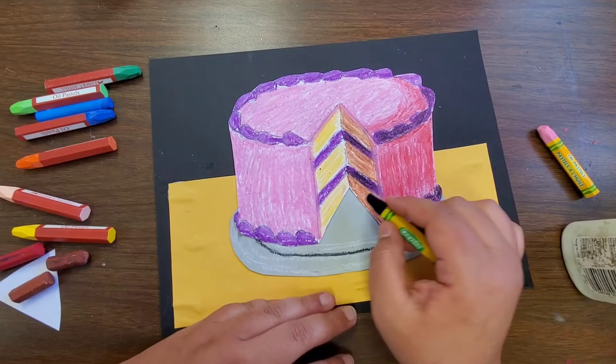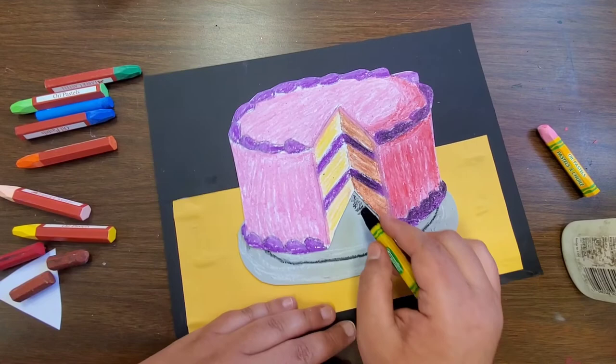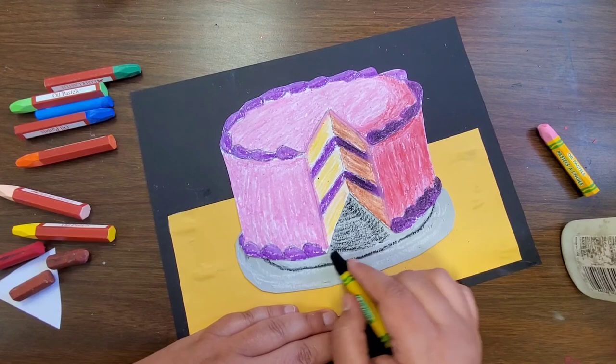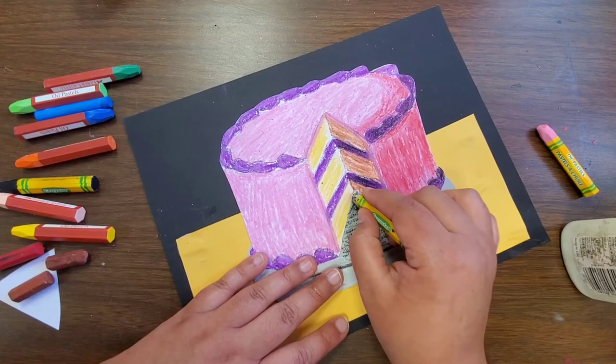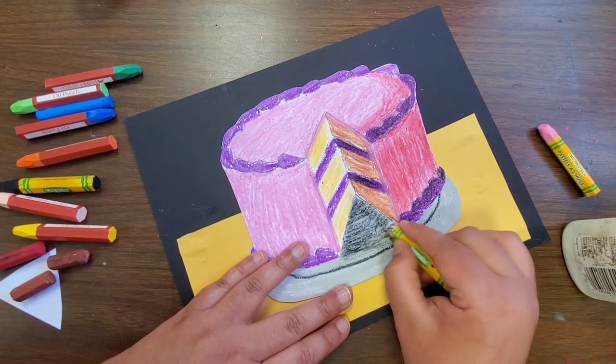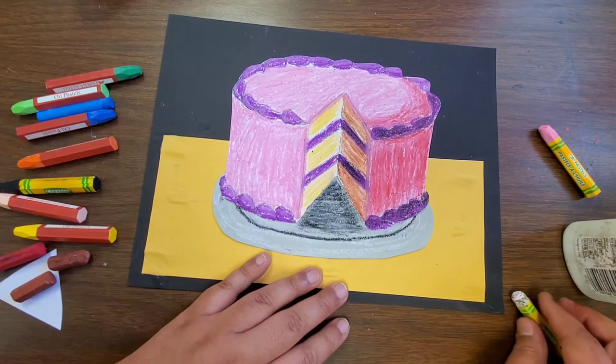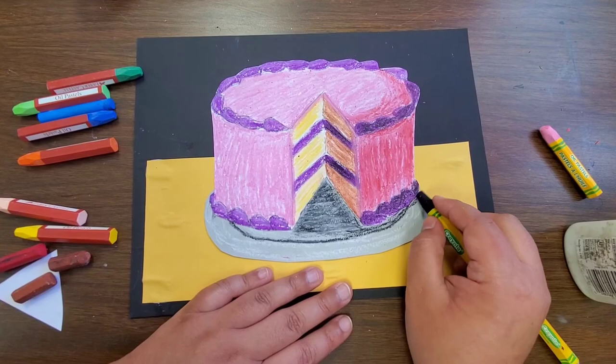Now I can go back in and add some shadows right here where my cake is. I'm going to do some black shadows just right here, really light, and take my white pastel and blend that out. I want my shadows to go all the way under on this side.